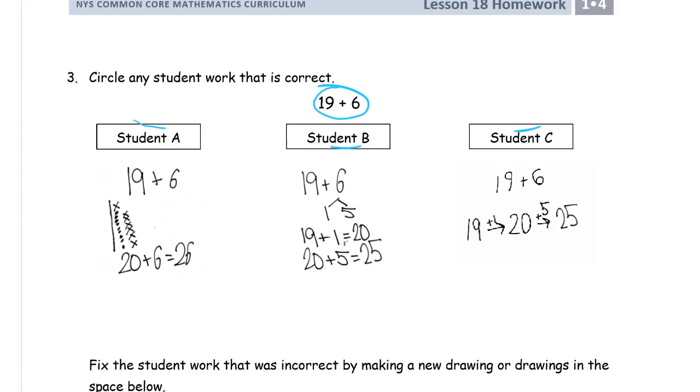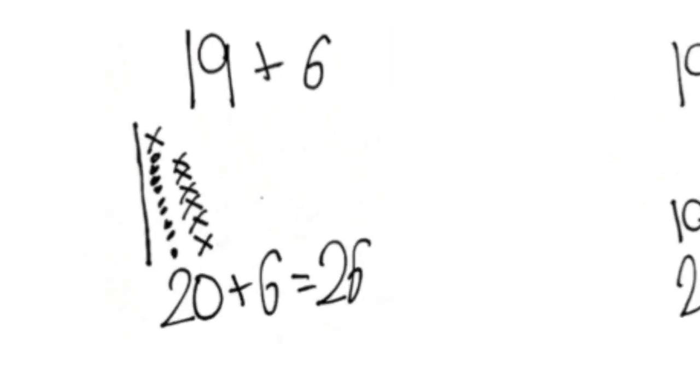Let's see, 19 plus 6. This is really hard to count but 1, 2, 3, 4, 5, 6, 7, 8, 9. So we drew the right number there, that's 19. And then we need 6 X's, right? 1, 2, 3, 4, 5, 6, 7. So yeah, he drew an extra X.